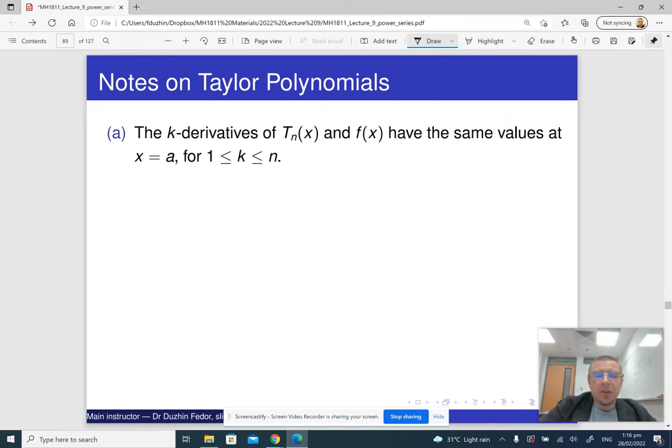Now, derivatives of order k of the Taylor polynomial are going to be the same as derivatives of the function f itself at the given point for the order up to n. Well, by the way, it says from 1 to n,